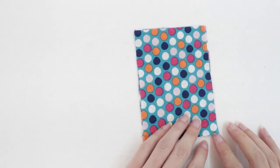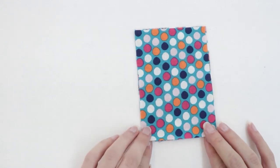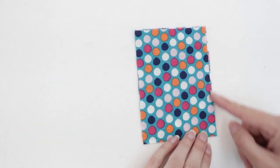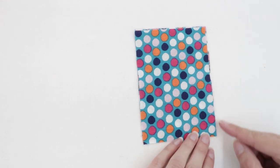I'm going to place my pieces wrong sides together and stitch along the edge with a quarter inch seam allowance or just a smidge less.